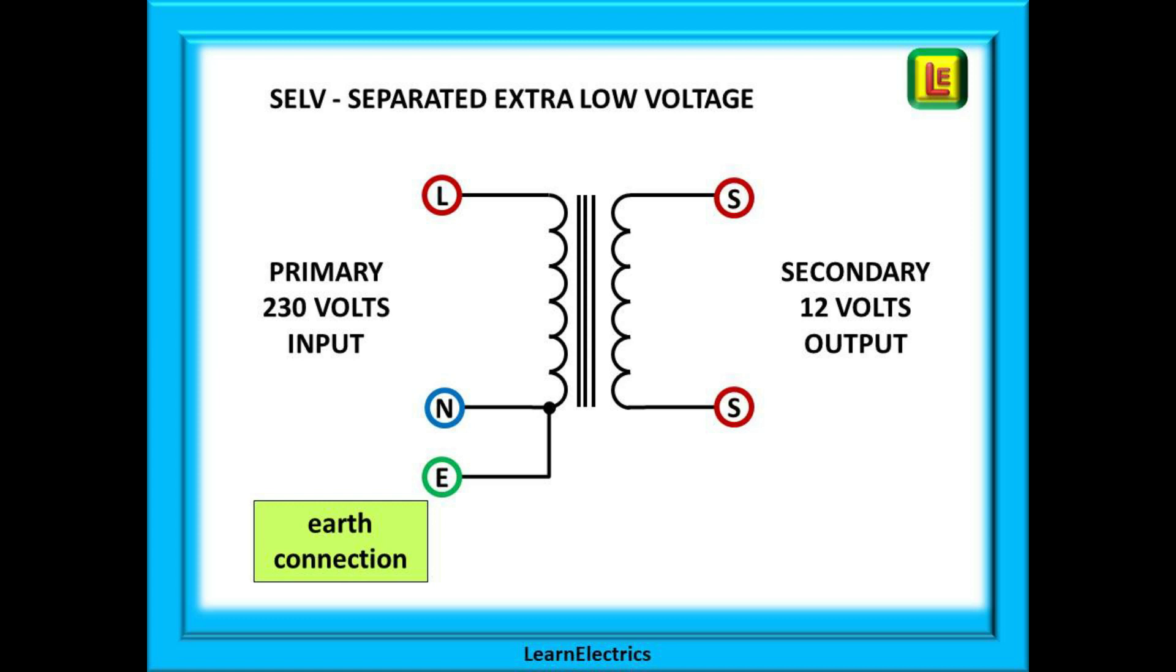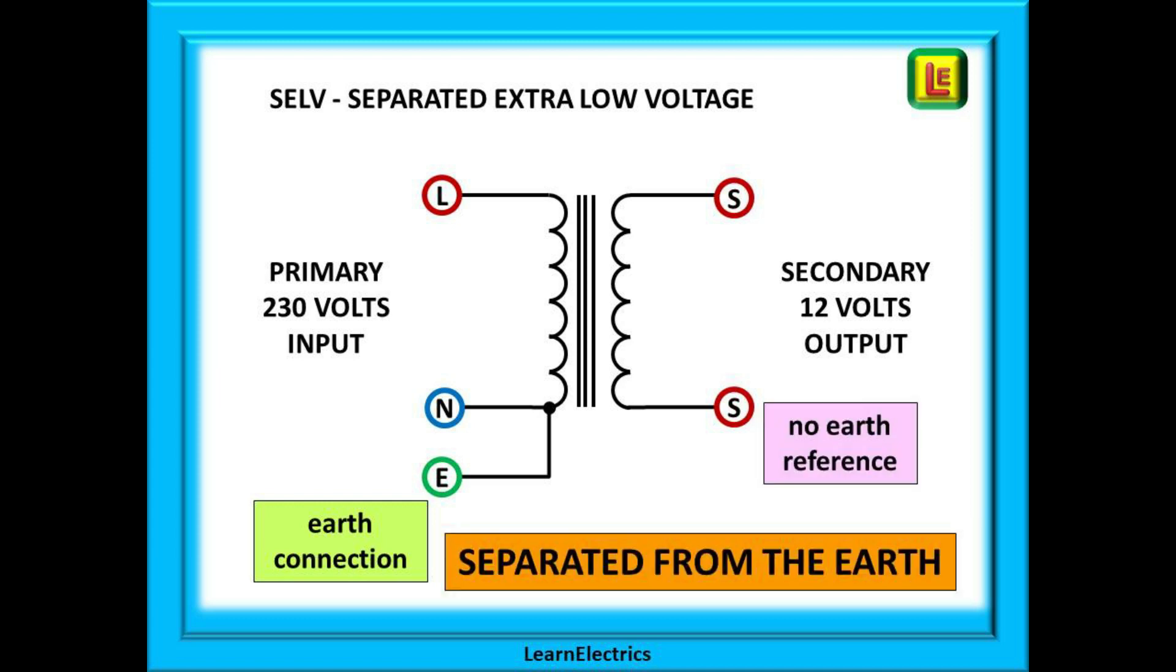We also have the secondary or output side at 12 volts in our case. Notice there is no earth reference on the secondary side. With no earth on the secondary side, a single fault on the 12 volt side does not have an earth return path and therefore you should not receive an electric shock from the secondary side, because there is no earth return path back to the secondary winding. This is where the term separated comes in. The extra low voltage side is separated from the earth.